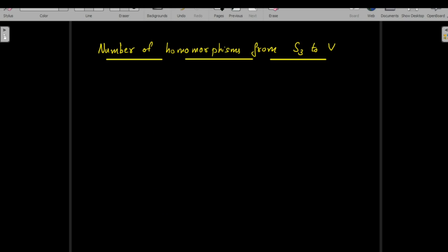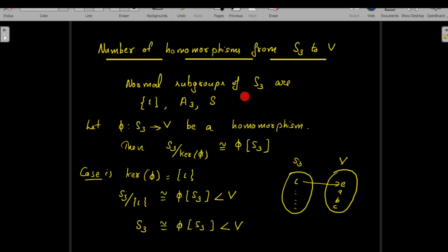Now let us find the number of homomorphisms from S₃ to V, where S₃ is the symmetric group on 3 letters and V is the Klein 4-group. We first write all normal subgroups of S₃. The normal subgroups of S₃ are: {ι} (only the identity), the alternating group A₃ (all even permutations in S₃), and S₃ itself. If φ from S₃ to V is a homomorphism, then by the Fundamental Homomorphism Theorem, S₃/ker(φ) is isomorphic to φ(S₃).